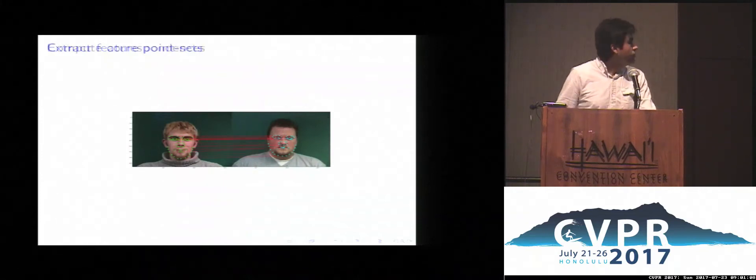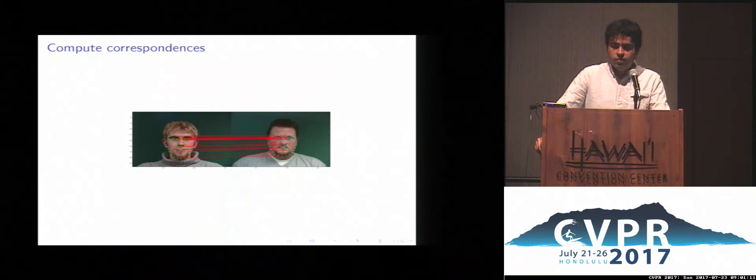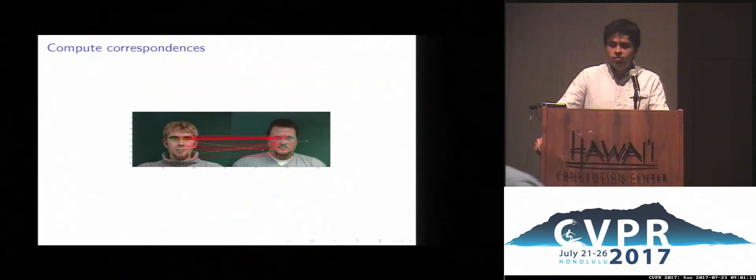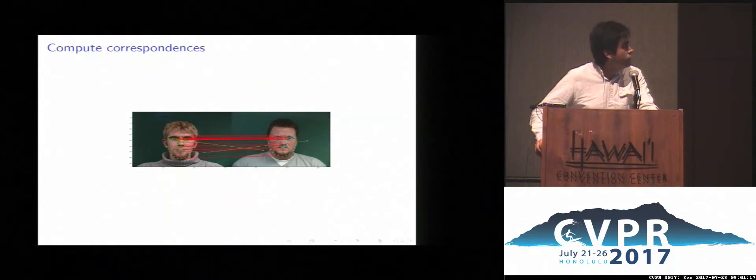Commonly, for this, we provide a set of correspondences of the points, and then the alignment is computed based on these correspondences. This has a problem with outliers and missing points.